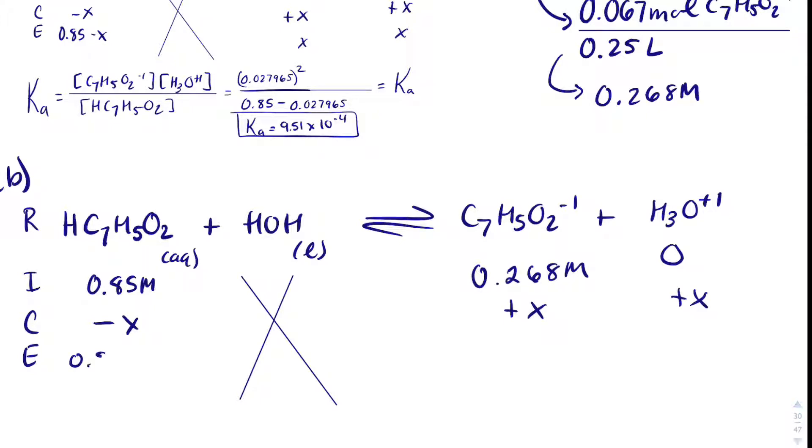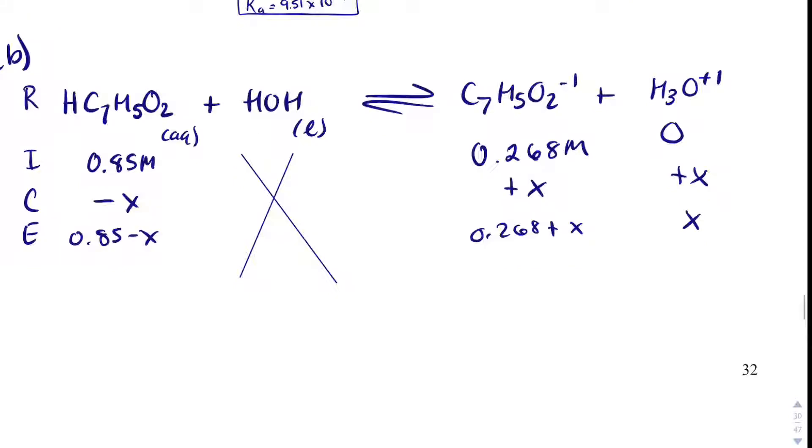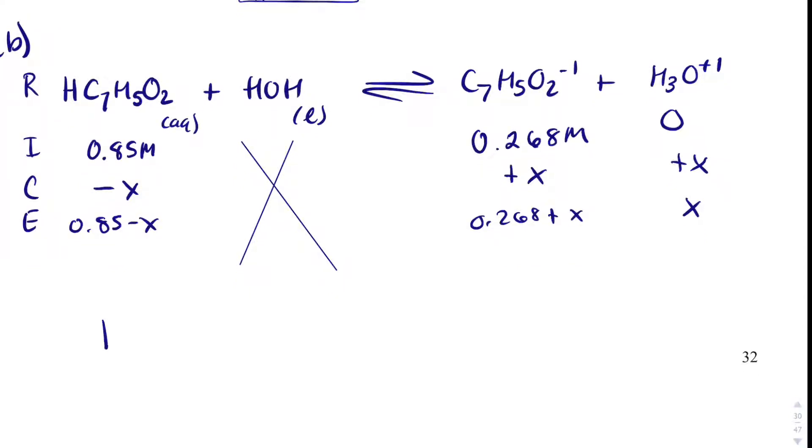This will be then minus X plus X plus X. 0.85 minus X. 0.268 plus X and X. And I can plug that all into Ka and solve for X. However, it's a common ion question. I would not do that. What I would do is I would just use the Henderson-Hasselbalch equation. Either will work, but the Henderson-Hasselbalch equation will be a little bit easier.